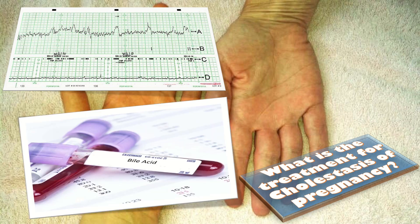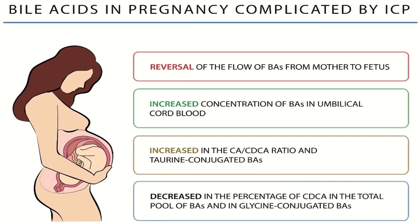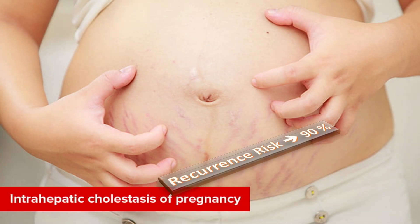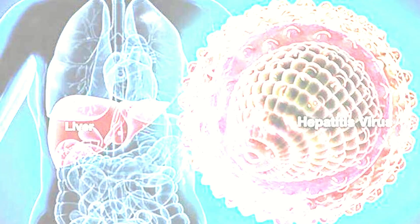In pregnancy complicated by intrahepatic cholestasis, there is reversal of the flow of bile acids from mother to fetus, increased concentration of bile acids in the umbilical cord blood, an increase in the CA to CDCA ratio, and taurine-conjugated bile acids, along with a decrease in the percentage of CDCA in the total bile acid pool and in glycine-conjugated bile acids. The recurrence risk of intrahepatic cholestasis of pregnancy is about 90 percent.